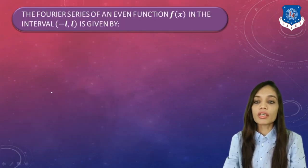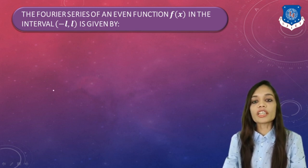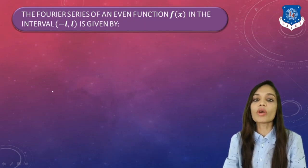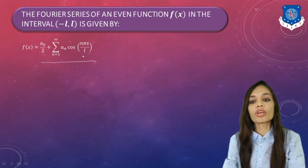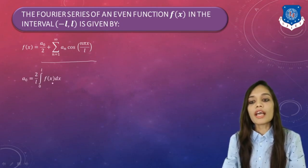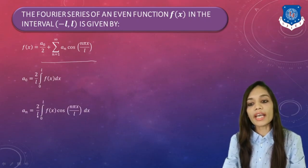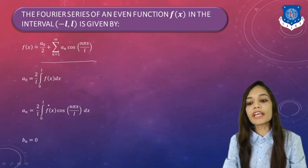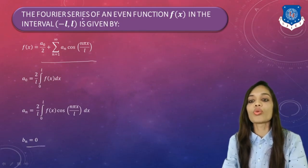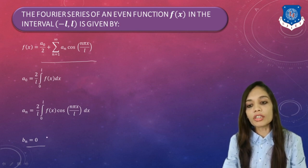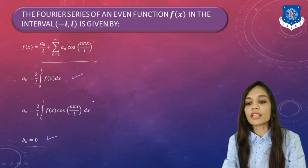Let us begin with the first topic: we will learn to find the Fourier series of an even function f(x) in the interval (-L, L). The Fourier series is given by f(x) = A0/2 + Σ An·cos(nπx/L), where A0 = (2/L)∫₀ᴸ f(x)dx, An = (2/L)∫₀ᴸ f(x)cos(nπx/L)dx, and Bn = 0. So whenever you have an even function on a symmetric interval (-L, L), Bn = 0 and you only need to find A0 and An.